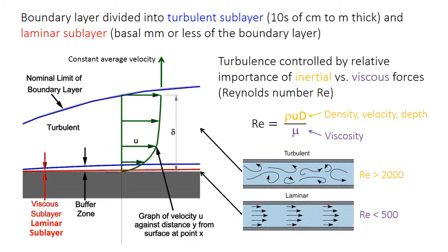At the very bottom of the boundary layer, in the millimeter or so above the bed, the flow velocity becomes so low that turbulence can't be maintained. Therefore, the flow becomes laminar — very smooth, without the swirling motion found in turbulent flows. Because of this distinction, the lowest part of the boundary layer is called the laminar sublayer, sometimes called the viscous sublayer. The upper part, which is the vast majority of the boundary layer, is the turbulent sublayer. These two sublayers turn out to be very important because they each influence different types of bedforms.